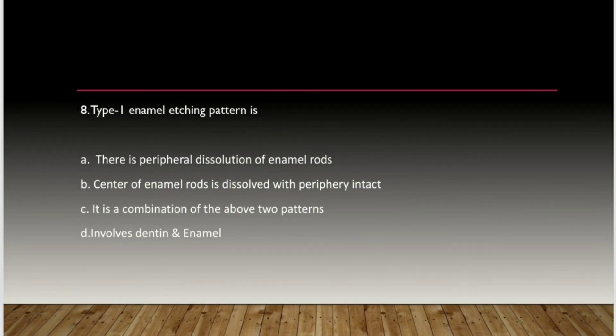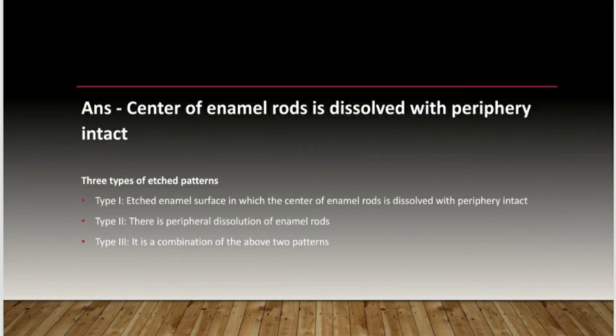Type 1 enamel etching pattern: is it peripheral dissolution of enamel rods, center of enamel rods dissolved with periphery intact, a combination of the two, or involves dentin and enamel? The answer is center of enamel rods dissolved with periphery intact. There are three types of enamel etching patterns: Type 1 — center of enamel rods dissolved with periphery intact; Type 2 — peripheral dissolution of enamel rods; Type 3 — a combination of the above two patterns.